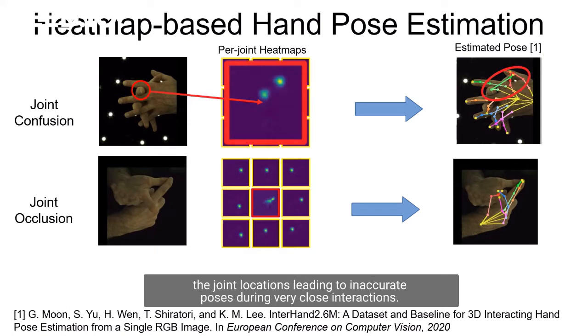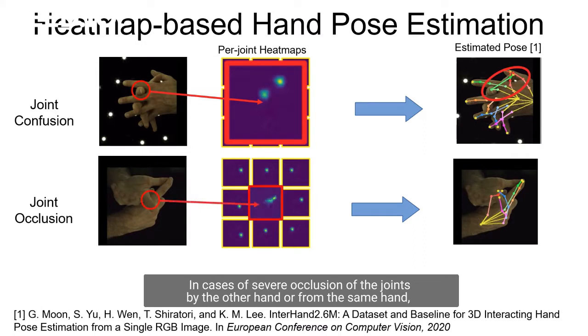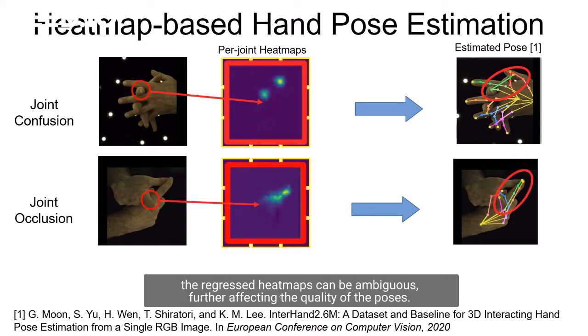Due to apparent similarity of the fingers, the heatmaps tend to confuse the joint locations leading to inaccurate poses during very close interactions. In cases of severe occlusion of the joints by other hand or from the same hand, the per-joint heatmaps can be ambiguous, further affecting the quality of the poses.